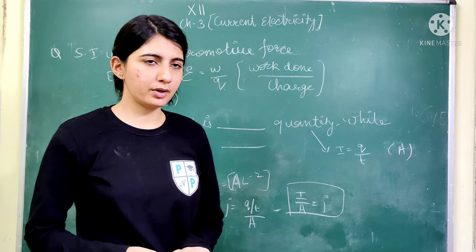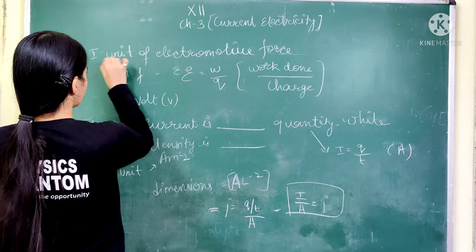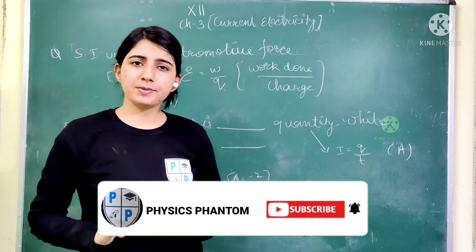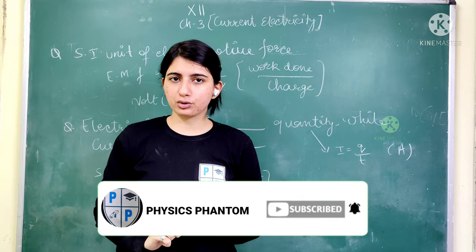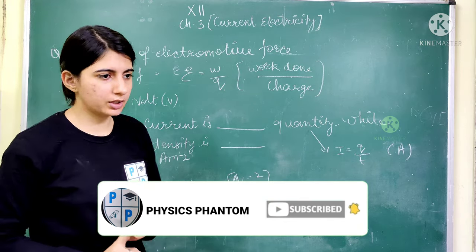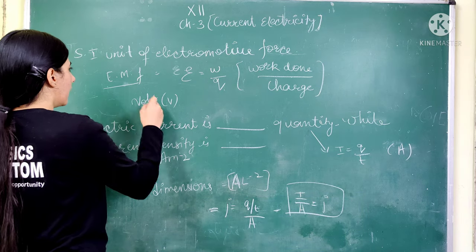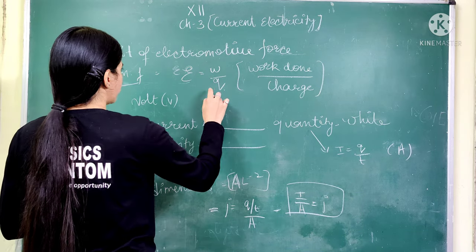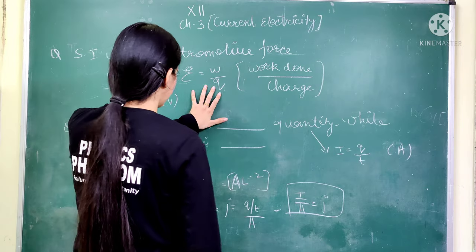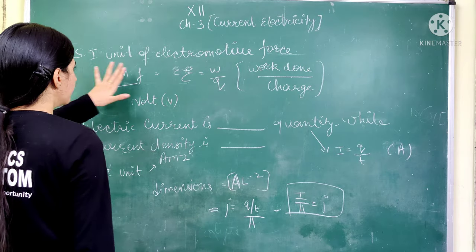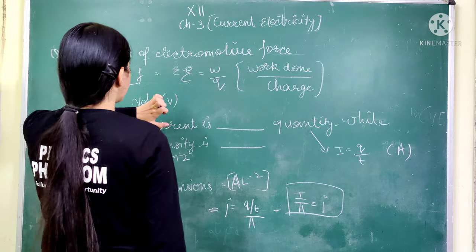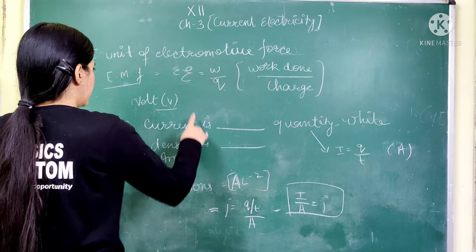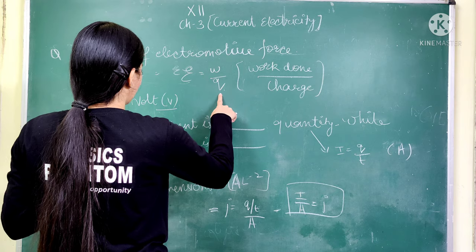The first question is about electromotive force and its SI unit. Electromotive force is denoted by stylish E, or simply EMF. The SI unit is volt, denoted by V. The formula is E is equal to W upon Q.